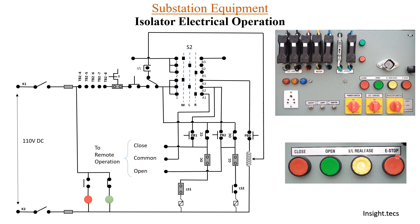After the overload relay NC contact, there is the E-stop — emergency stop push button. If you are carrying out any operation of the isolator and there is an emergency and you need to suddenly stop the operation, you can use this E-stop push button. Once this push button is operated, the DC will be disconnected at this point and DC will not go forward.